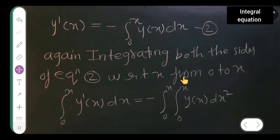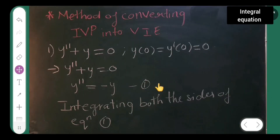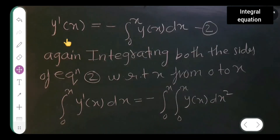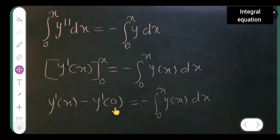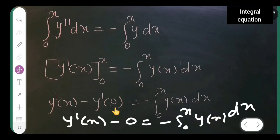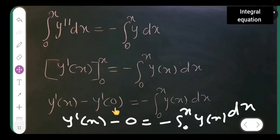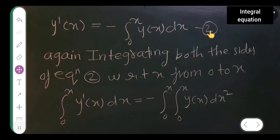Now, from the given initial conditions, y'(0) = 0. Substituting, y'(x) minus 0 equals minus the integral from 0 to x of y(x) dx. Therefore, y'(x) equals minus the integral from 0 to x of y(x) dx. Call this equation 2.